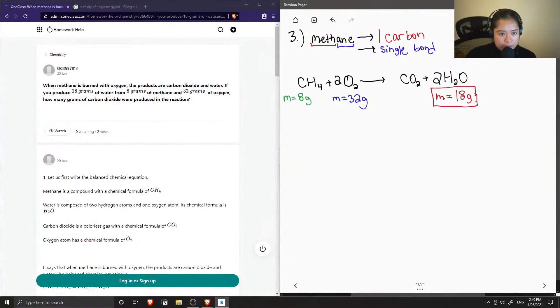But luckily for us, they gave us the mass of water that was formed, which was 18 grams. So all we need to do is find the number of moles of water in 18 grams and then relate that to find the number of moles of carbon dioxide. And then we can convert that to grams. So again, just to sum it up, step one is to find the number of moles of water.